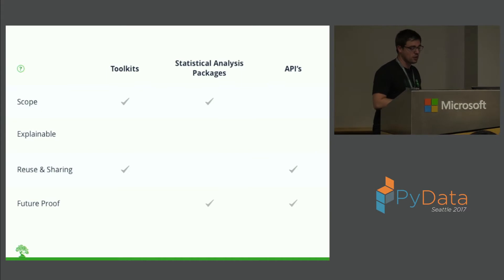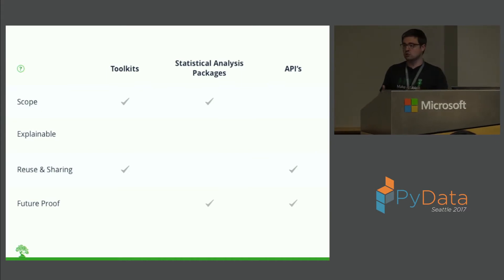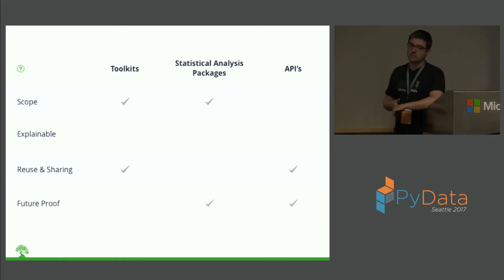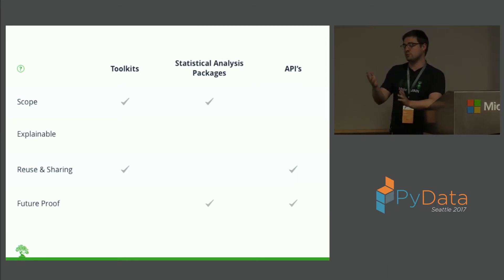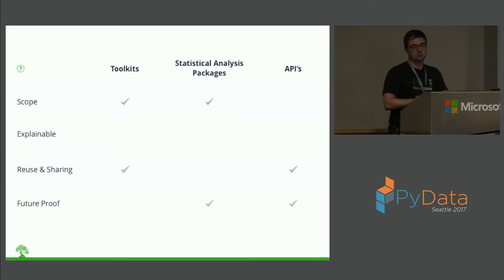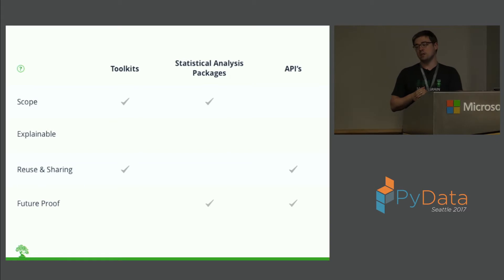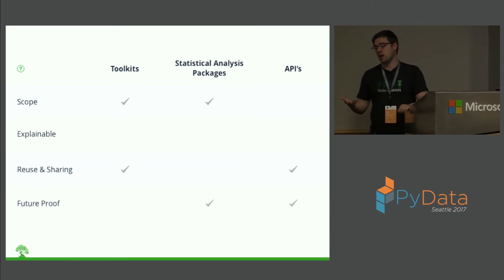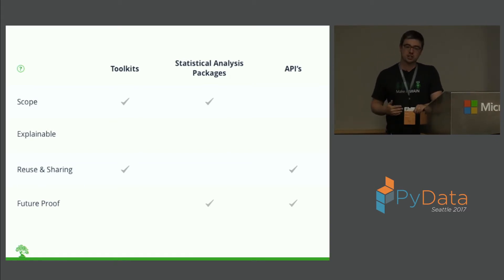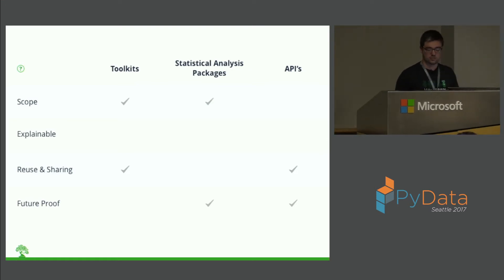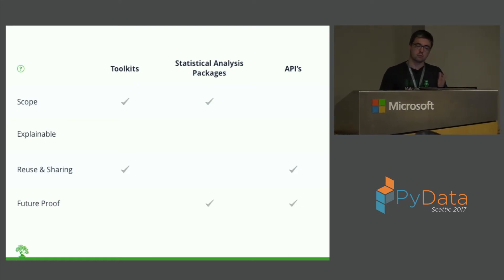APIs definitely hit a sweet spot in that they're the easiest to program with, but the problem is they only do a specific slice of functionality. So if you have a simple problem that can be solved by ImageNet — like telling you what objects are on a table — you're fine. But we've talked to customers who need to know, for example, when a board comes off the line whether it has a tombstone capacitor. Tombstone capacitors are not in the lexicon of ImageNet, so they end up back in the toolkit category.